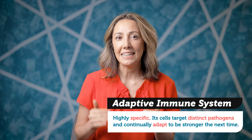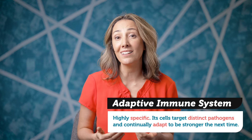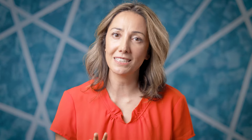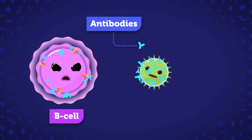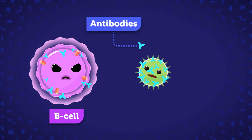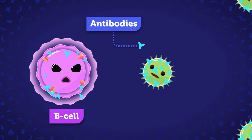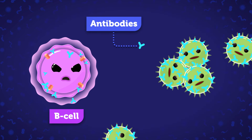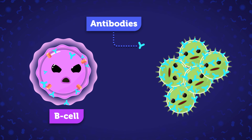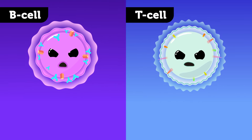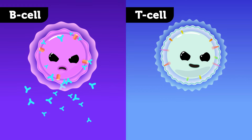Occasionally, the body needs a more specific approach in tackling a pathogen, and calls for special forces. That's where the adaptive immune system comes in. Unlike the innate immune system, the adaptive immune system is highly specific — its cells target distinct pathogens and continually adapt to be stronger the next time. Two important members of this specialized team are the B cells and T cells. B cells are a type of white blood cell that creates antibodies, which are special, custom-made proteins designed to stick onto one specific pathogen. If an antibody binds the pathogen it's looking for, the body triggers an immediate immune response to rapidly destroy the threat — blocking pathogens from getting into healthy cells, making pathogens clump together to stop them from infecting more cells, and making them easier for other immune cells to eat.